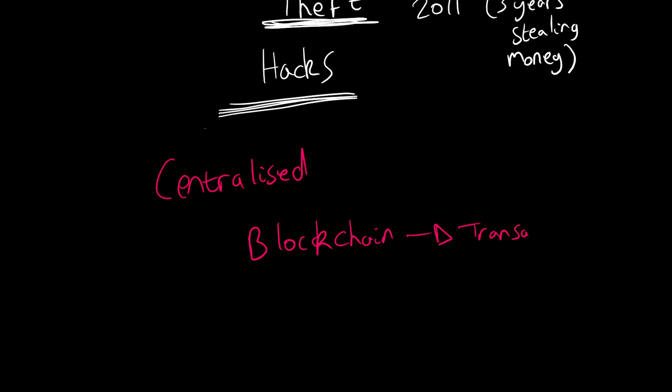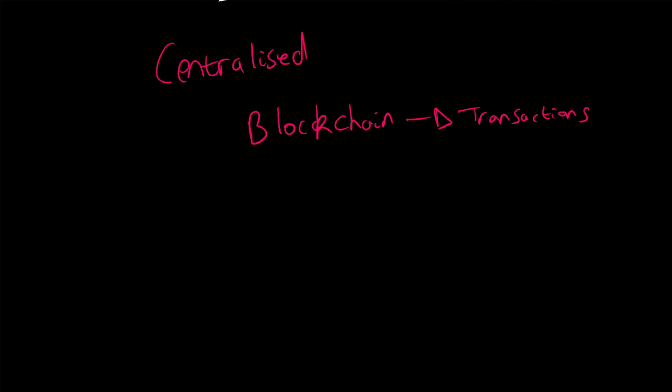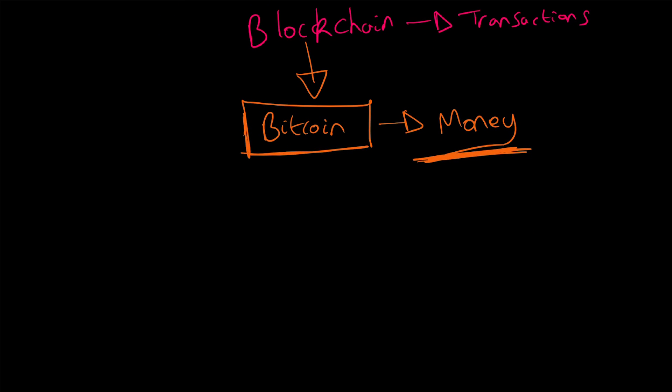We had this amazing system called blockchain which facilitated transactions. They could be transactions of money, of wills, of educational achievements. And on top of that, Bitcoin was built and various other platforms as well. Bitcoin, being the biggest one, was an amazing platform that was decentralized, distributed, and essentially a money-based platform. But on top of that, to aid the ease of use, we had exchanges.